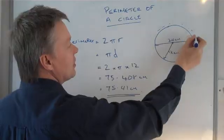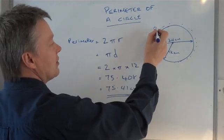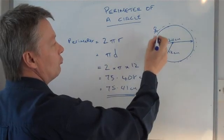distance of the perimeter, which is all the way around this circle. So it's a little fella running around.